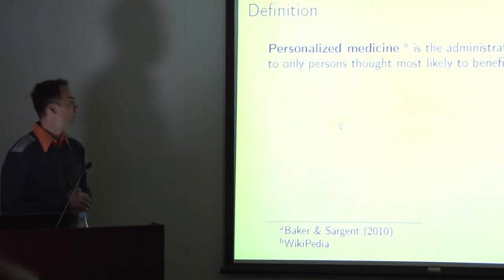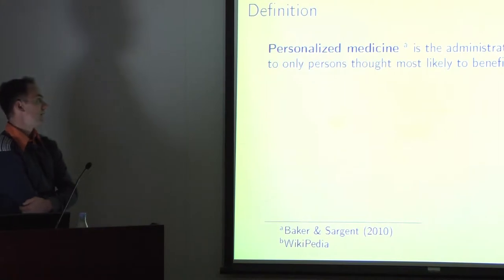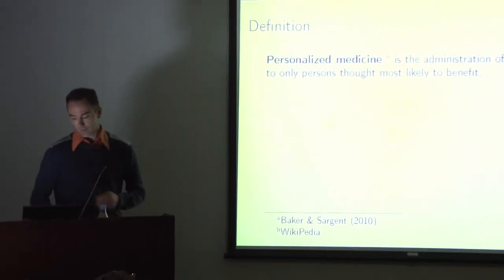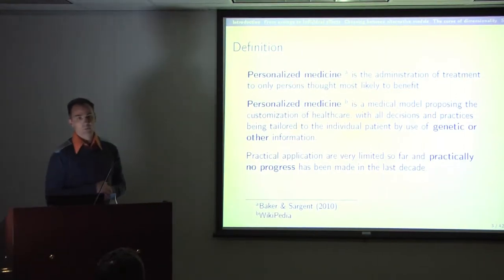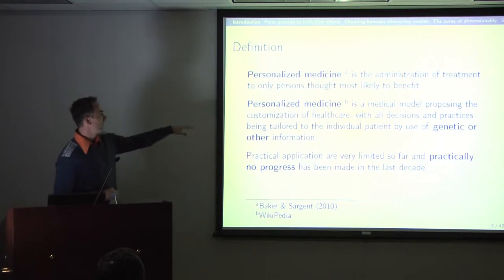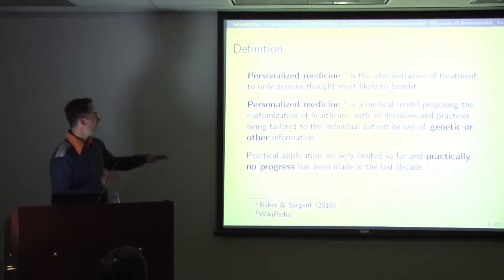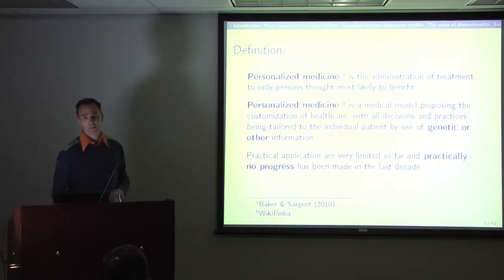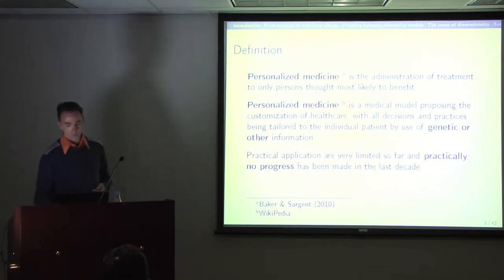This will be the structure of the talk. I start with the definition given in a paper by Baker and Sargent: personalized medicine means we want to treat only those persons who are likely to benefit from the treatment. A more complex definition from Wikipedia describes it as a medical model incorporating a lot of information, particularly genetic information. The Wikipedia page also claims there's practically no progress, and maybe after seeing my projects you'll understand why.